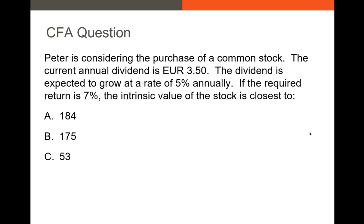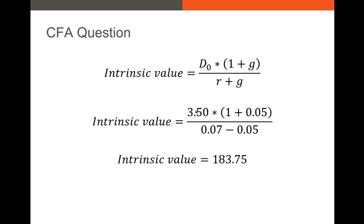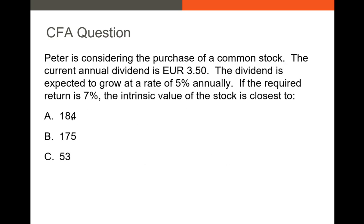Example: Peter is considering the purchase of a common stock. The current annual dividend is €3.50. The dividend is expected to grow at 5% annually, and the required return is 7%. Our D0 is €3.50, growth rate is 5%, and R is 7%. We plug in: 3.50 times (1 + 0.05), divided by (0.07 minus 0.05), giving us approximately €184. So the answer is choice A.